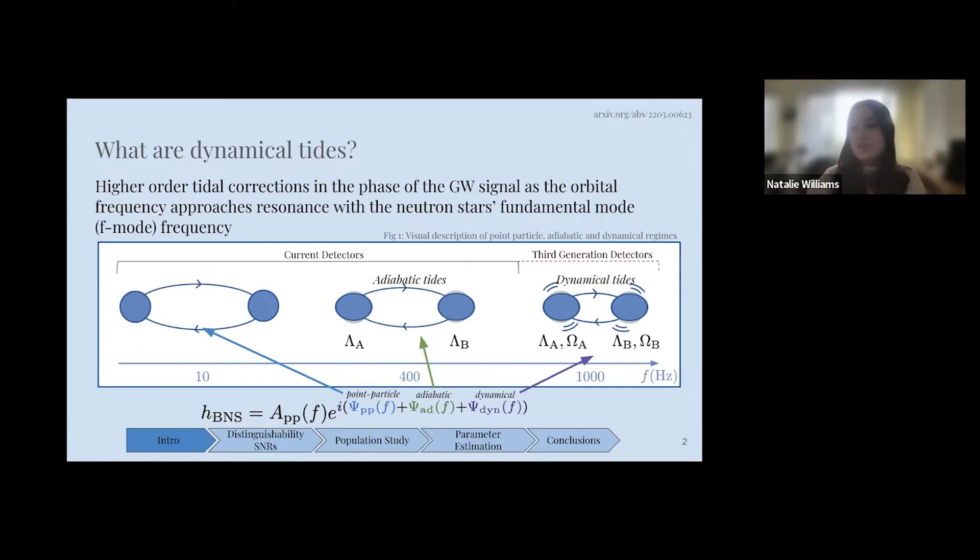We use universal relations to calculate lambda from the f-mode frequencies currently, but these are relying on some assumptions, assuming GR and particular equations of state. By measuring these quantities independently, we can test all of these assumptions. The f-mode frequency is also directly related to the equation of state, so measuring it would provide extra constraints on the equation of state.